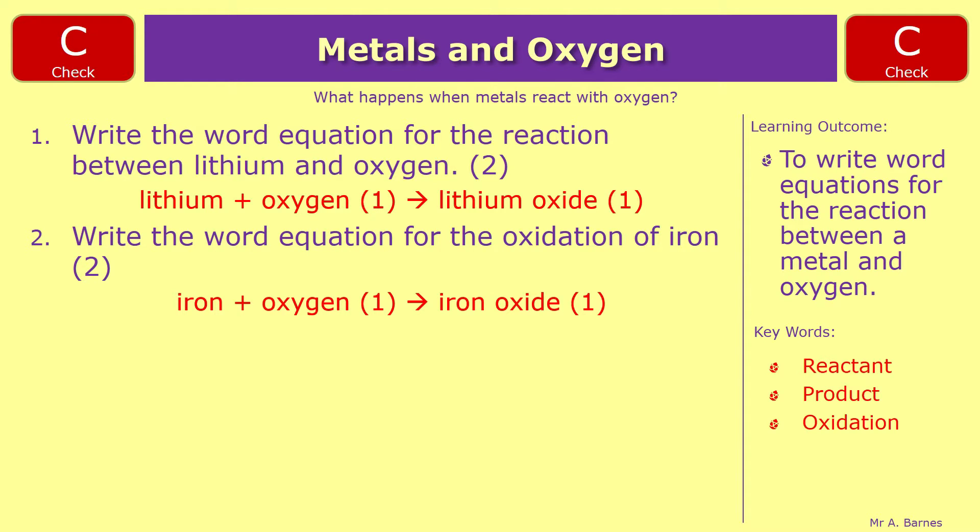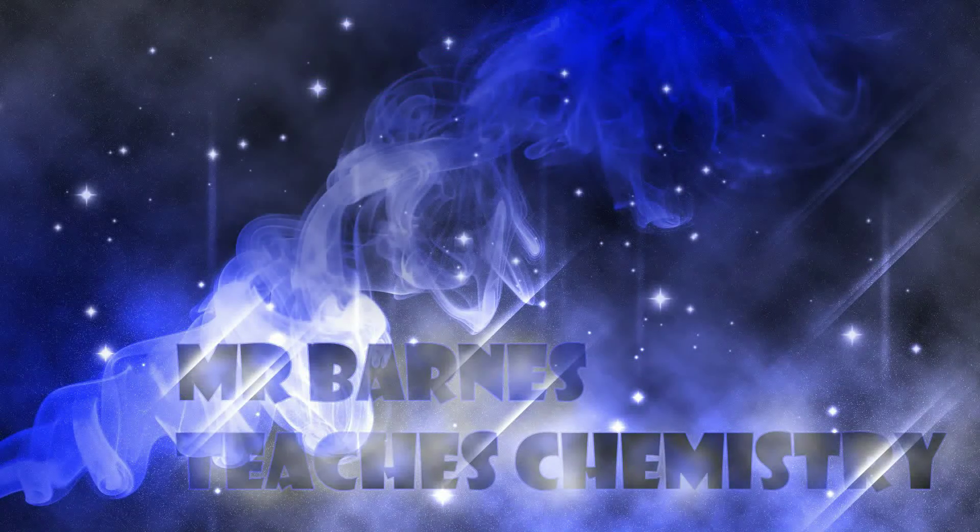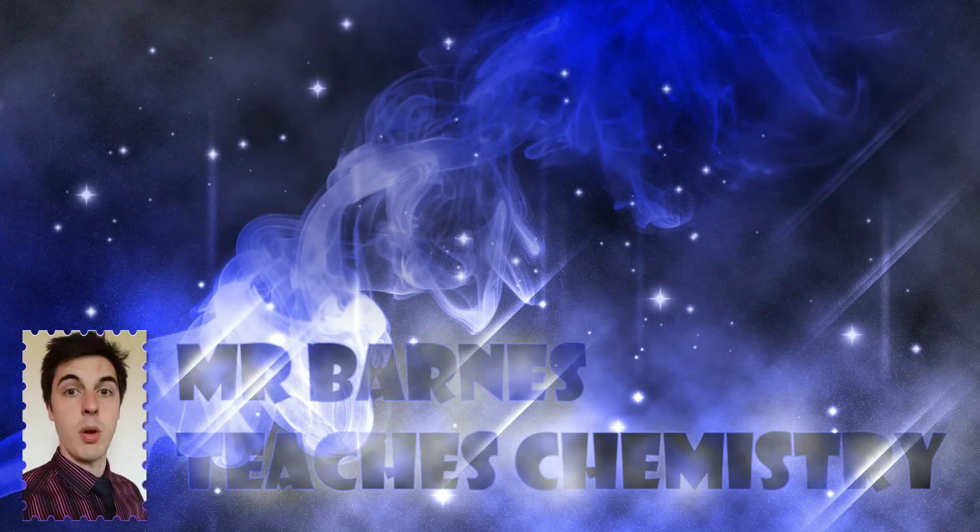That's the end of this part so you've got two review questions. Which are: lead pipes can often rust, this happens when the lead reacts with oxygen in the air, write the word equation for the reaction. And number two, write the word equation for the reaction between vanadium and oxygen. And that ends this video.